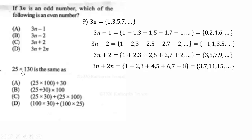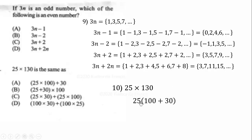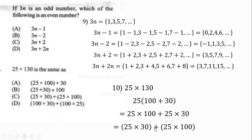We have 25 times 130. Using the distributive property, we expand 130 as 100 plus 30, giving us 25 times 100 plus 30. Distributing 25 gives 25 times 100 plus 25 times 30, which we can rewrite as 25 times 30 plus 100 times 25. So the correct answer is option D.